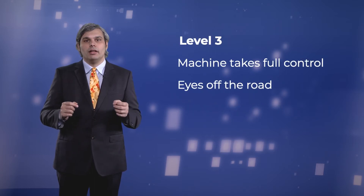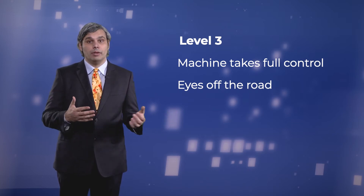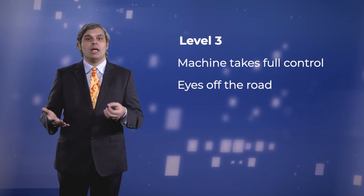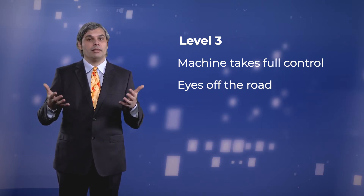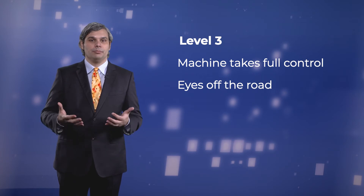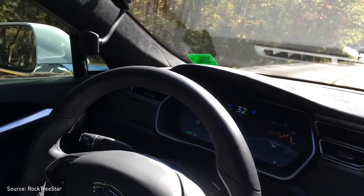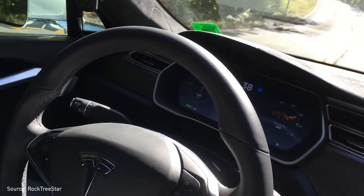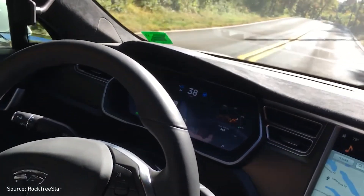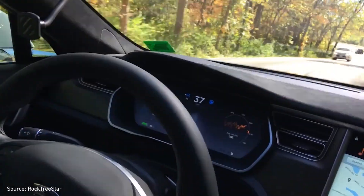In level 3 cars, the human would be supposedly allowed to direct attention away from the driving task. In a level 3 car, you would be able to watch a movie on your phone, but you would still have to sit in the driver's seat, and be ready to take over when the system requires you to do it. Whether safe level 3 systems are possible is still an open question. The problem is that, presumably, when the car would ask you to take back control, you would have to react very quickly, and it would take you a few seconds just to stop watching the movie and try to get your bearings and assess the situation.